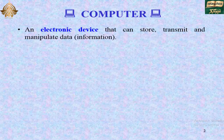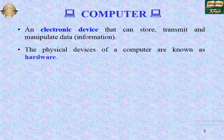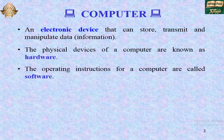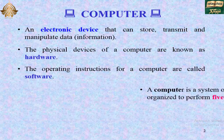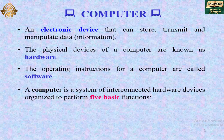An electronic device that can store, transmit and manipulate data or information is called a computer. The physical devices of a computer are known as hardware. The operating instructions for a computer are called software. A computer is a system of interconnected hardware devices organized to perform five basic functions.